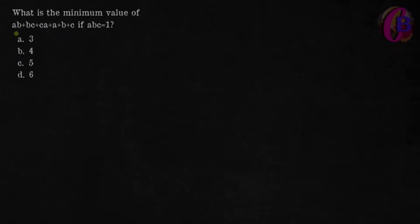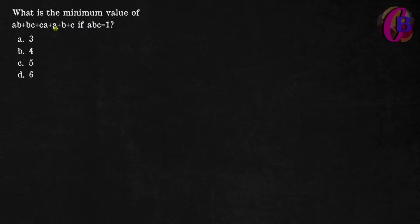What is the minimum value of ab + bc + ca + a + b + c if abc = 1? The options are 3, 4, 5, and 6.